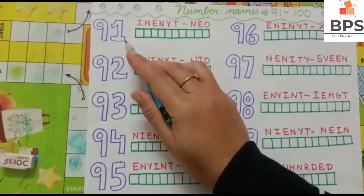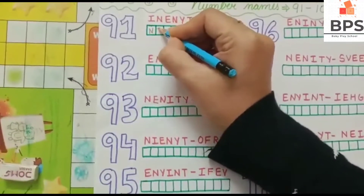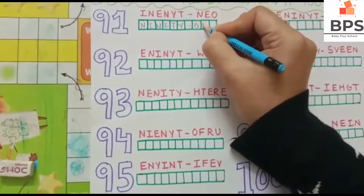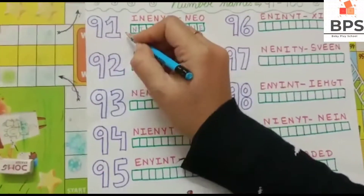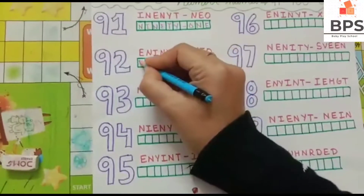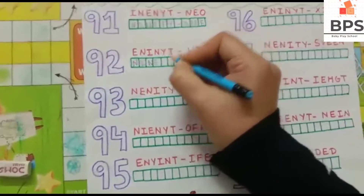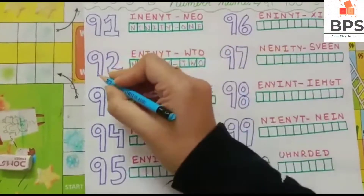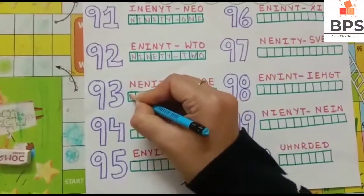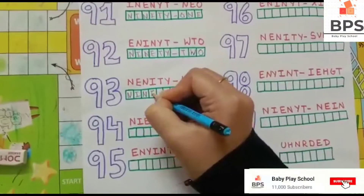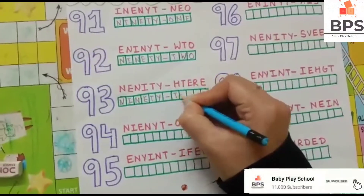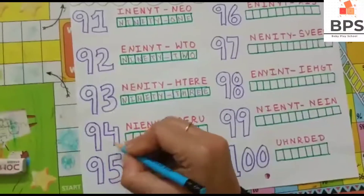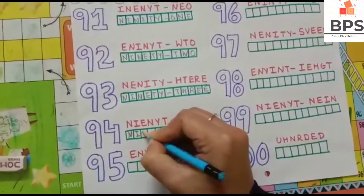91 — the spelling of 90 is N-I-N-E-T-Y, 90, then O-N-E, 1, so 91. 92 — N-I-N-E-T-Y, 90, T-W-O, 2, so 92. 93 — N-I-N-E-T-Y, 90, T-H-R-double-E, 3, so 93.